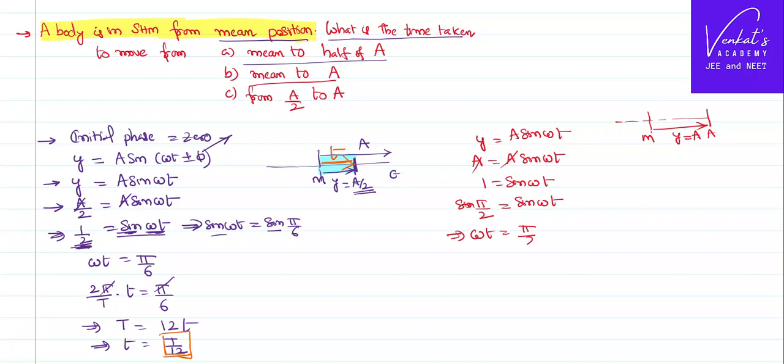Omega t equal to pi by 2. Omega can be written 2 pi by capital T time period into small t, that is pi by 2. So pi and pi can be cancelled, then small t equal to total time period by 4. So to move from here to here it takes a time of 1 by 4.